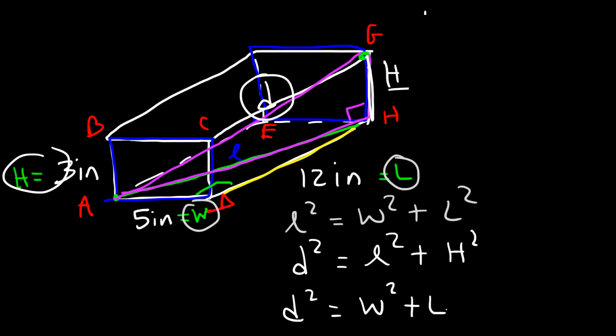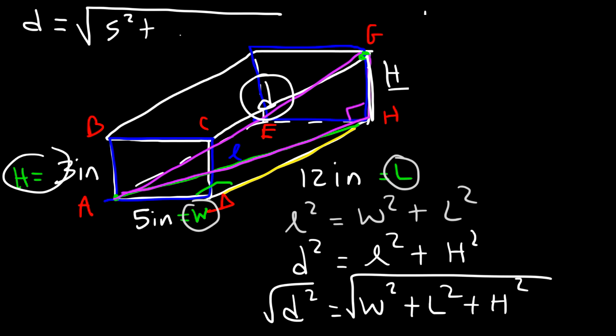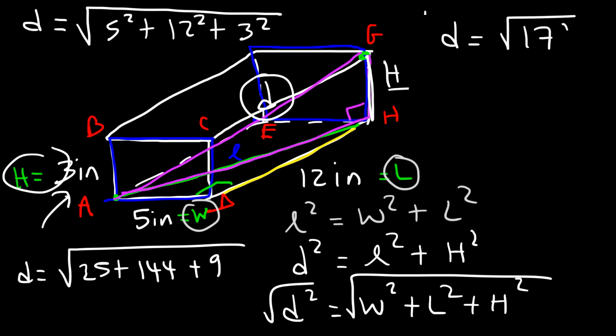W squared plus L squared plus H squared. That's 3 squared, so 5 squared is 25, 12 squared is 144, 3 squared is 9. 25 plus 144 is 169, plus 9 is 178. So D is the square root of 178, and we can't really simplify the radical, but we could get a decimal value, and so it's about 13.34 units long.